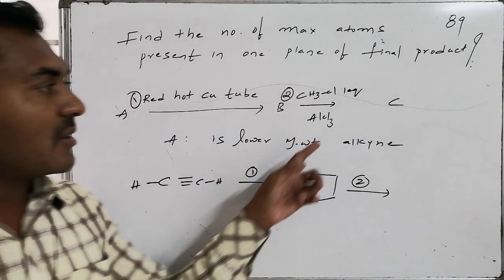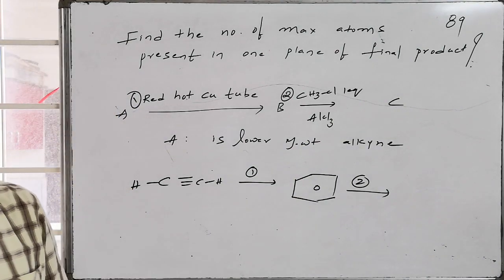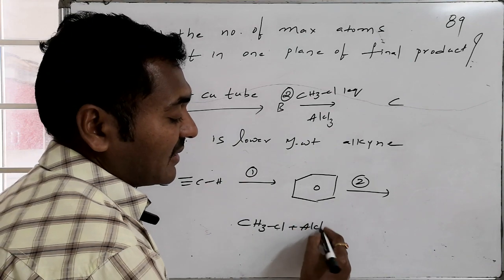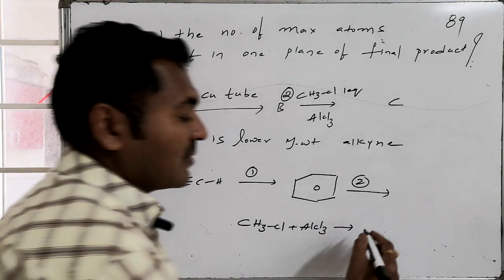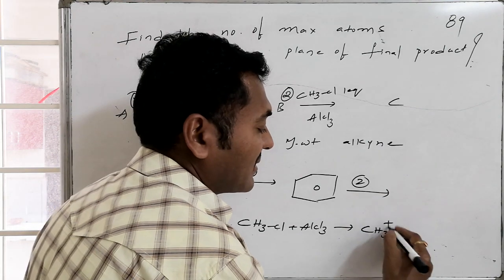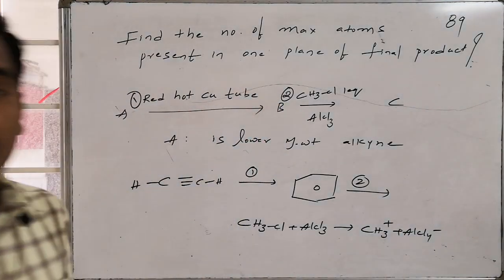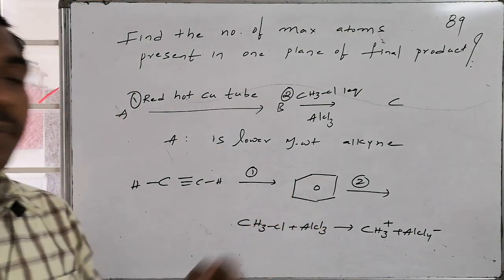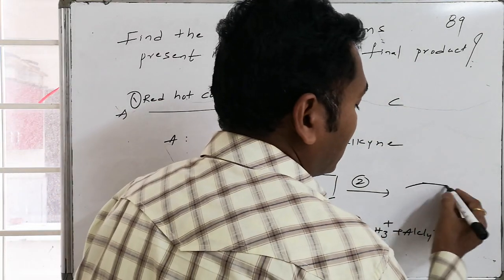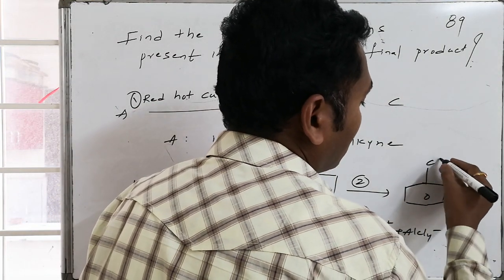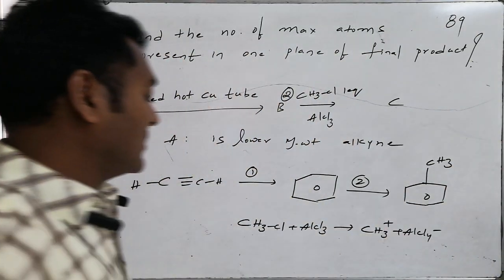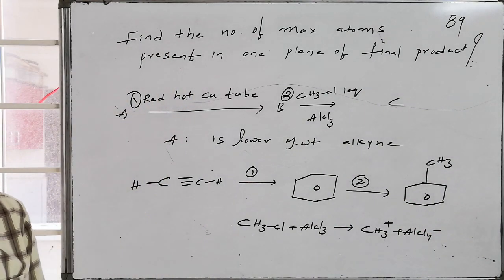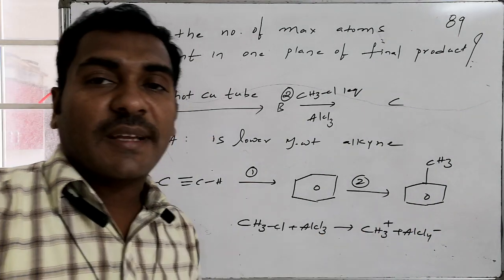B (benzene) subjected to the second reaction conditions — methyl chloride followed by AlCl3 — undergoes Friedel-Crafts alkylation. Methyl chloride plus AlCl3 generates a methyl cation plus AlCl4 minus. This electrophile attacks the benzene ring and converts it to methylbenzene. Now we need to find the maximum number of atoms present in one plane in the methylbenzene system.